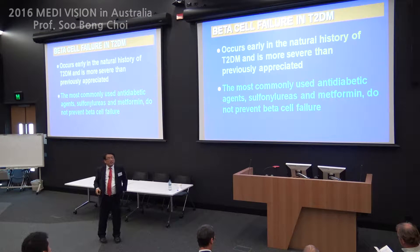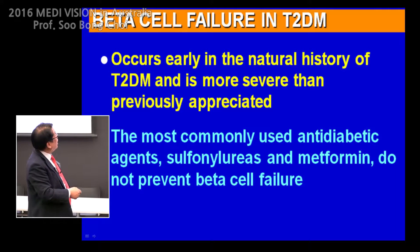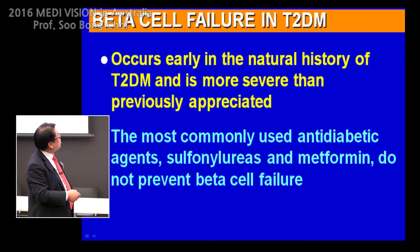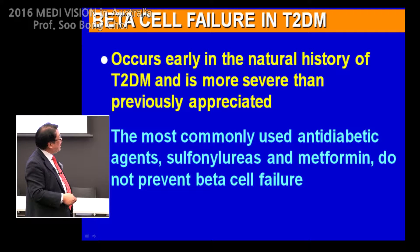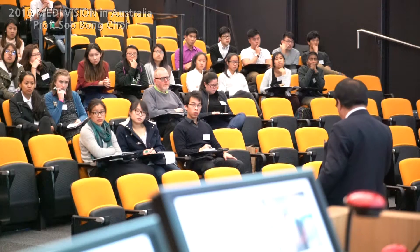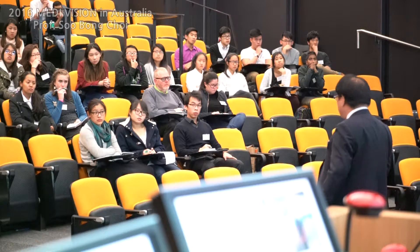In reality, it is very pessimistic. Beta cell failure in type 2 diabetes mellitus occurs early in its natural history and is more severe than previously appreciated. The most commonly used anti-diabetic agents — sulfonylureas and metformin — do not prevent beta cell failure. So we have a pessimistic concept.